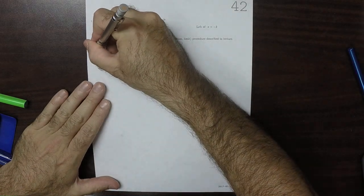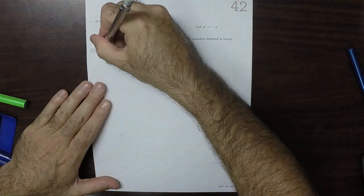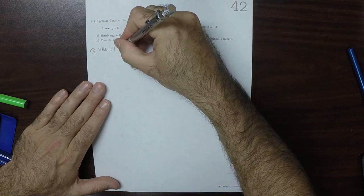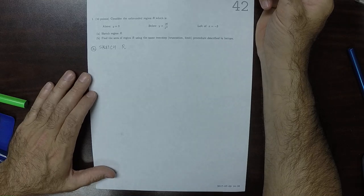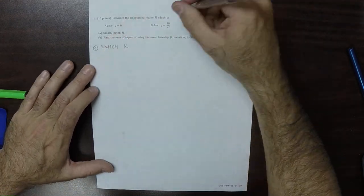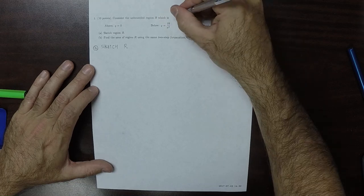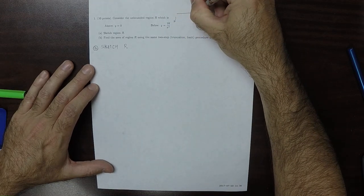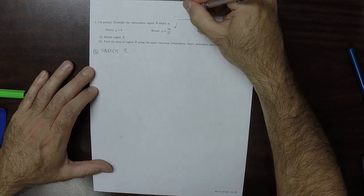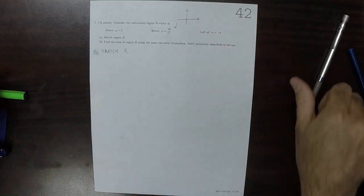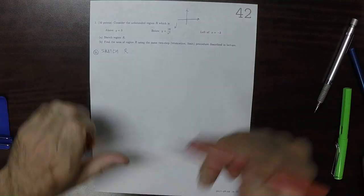the sketch of region R will look like this. So in the first place, this function by itself, y is 18 over x squared, looks like this.